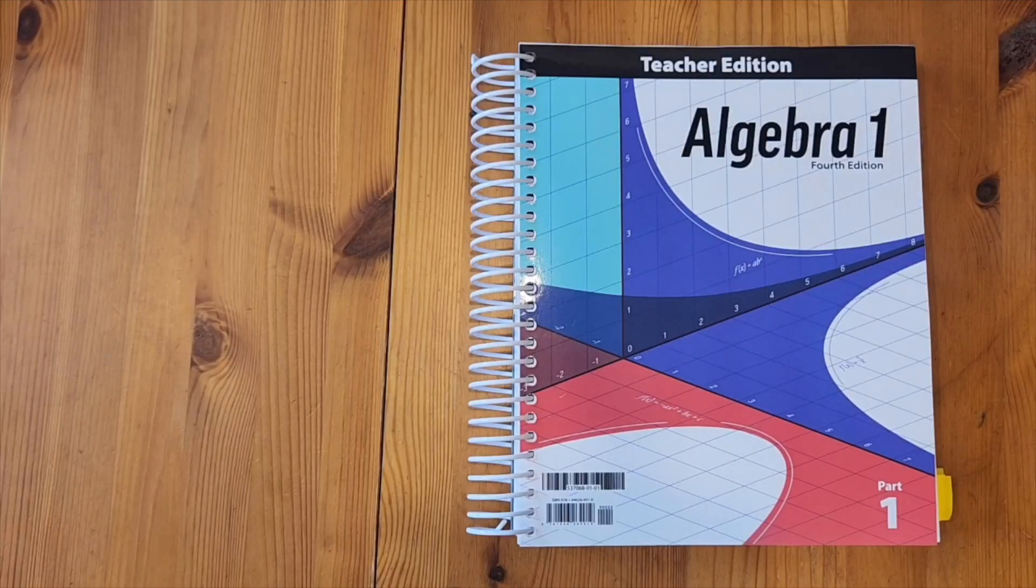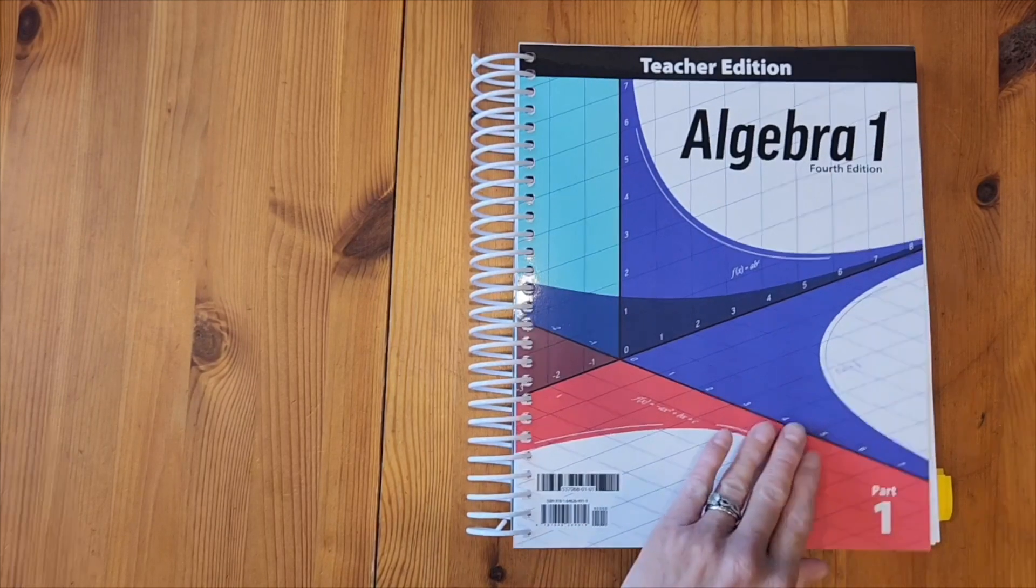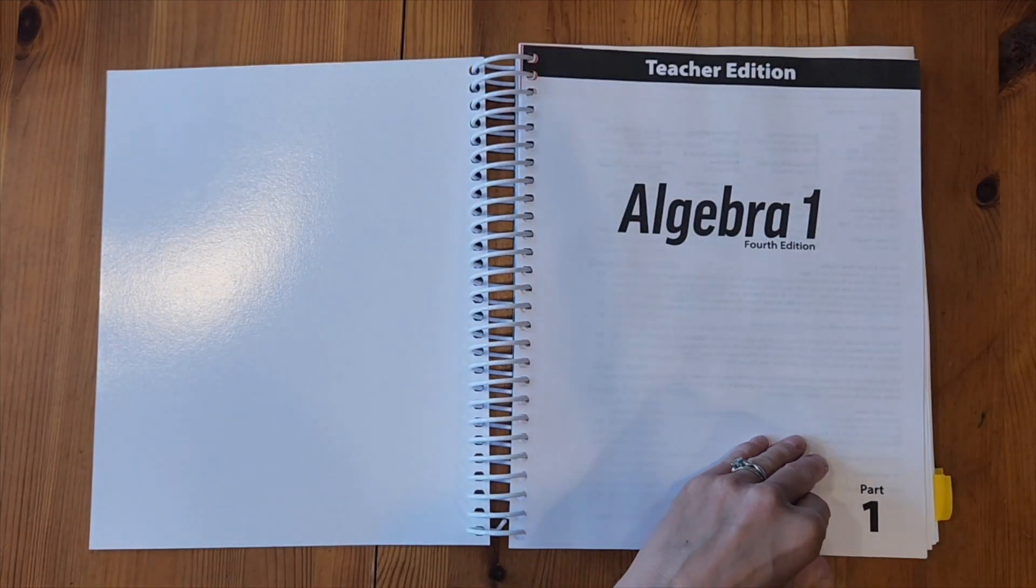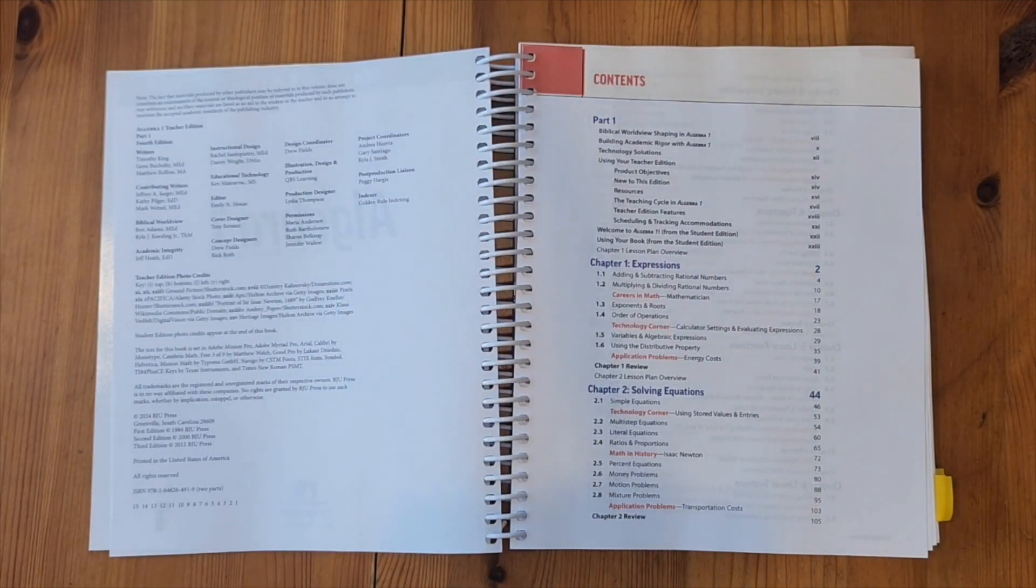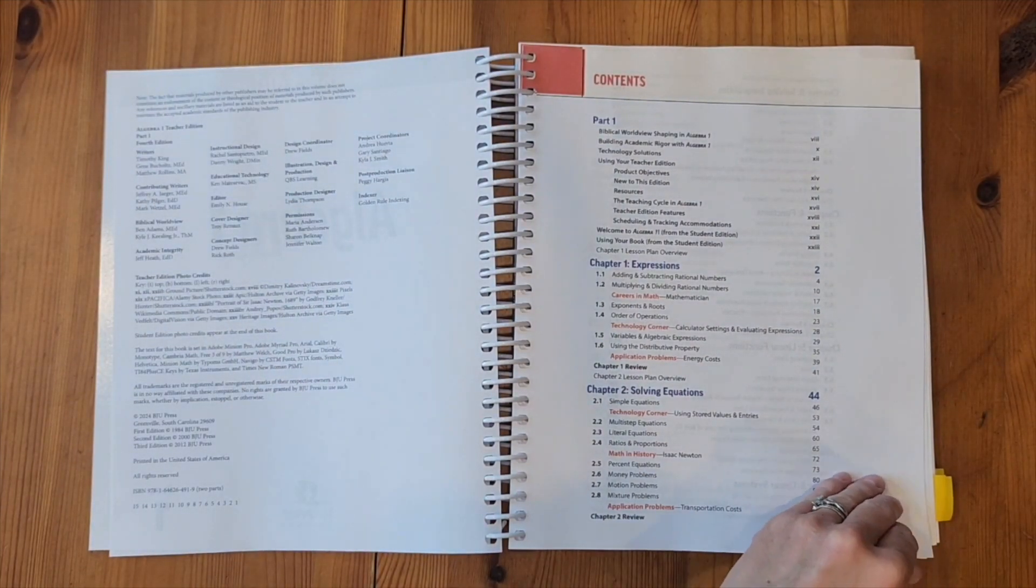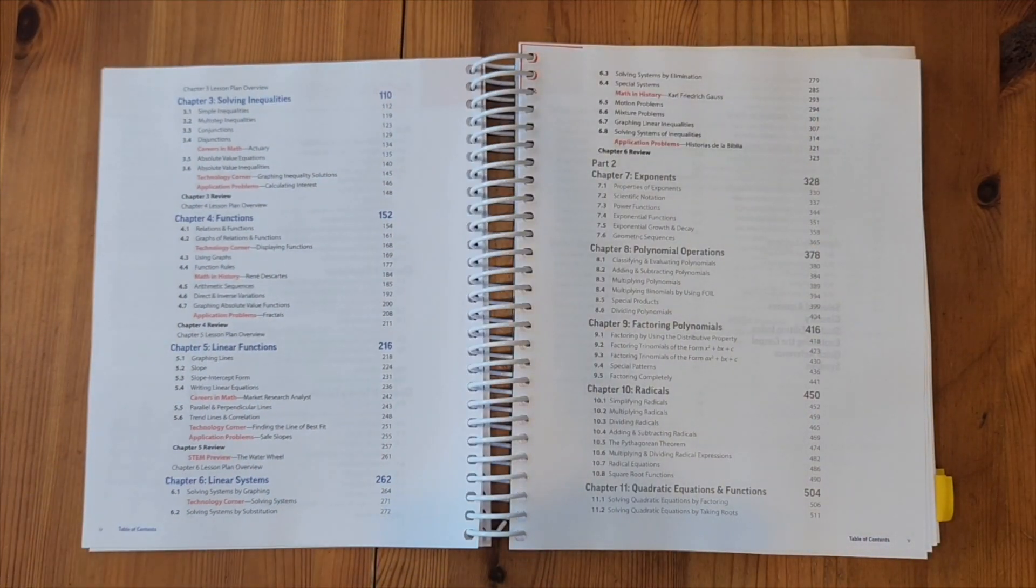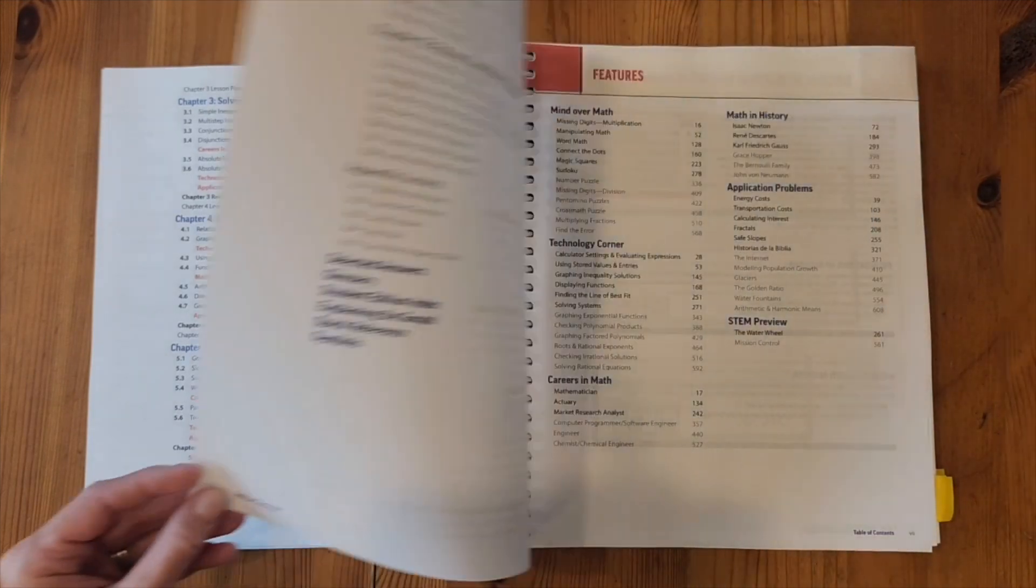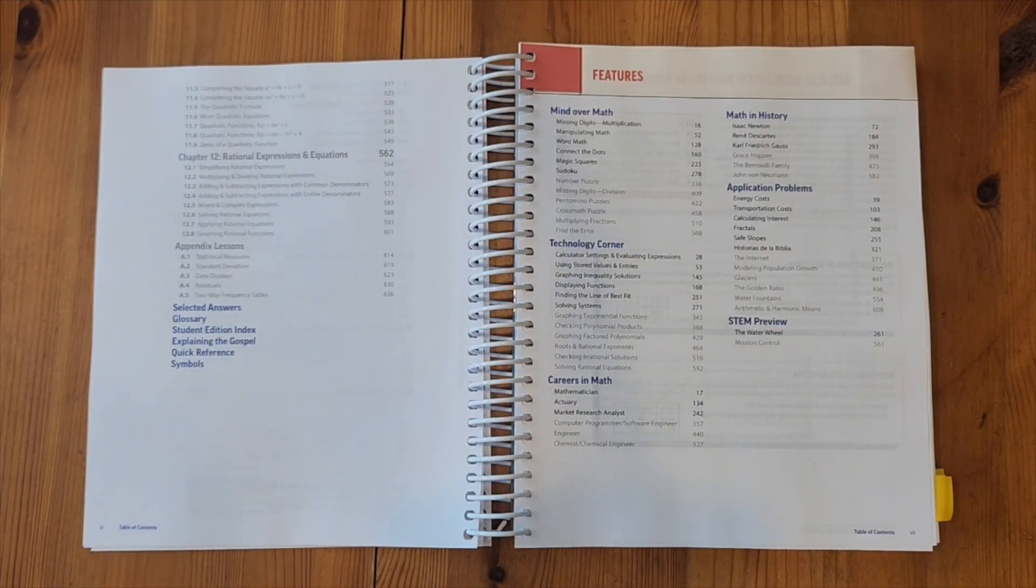This is the Algebra 1 fourth edition teacher edition. This does have two parts to this book. In part one we will find chapters on expressions, solving equations, solving inequalities, functions, linear functions, and linear systems. In part two we will find a chapter on exponents, polynomial operations, factoring polynomials, radicals, quadratic equations and functions, and finally a chapter on rational expressions and equations.